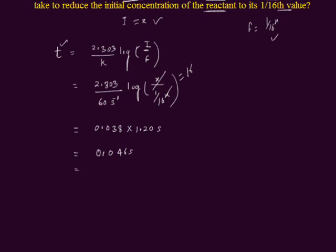We write this value in scientific notation. We move this decimal after 4, then you will get 4.6 multiplied by, since we move this decimal on right side after two digits, then you will get 10 to the power minus 2, and unit is second. This is the time.